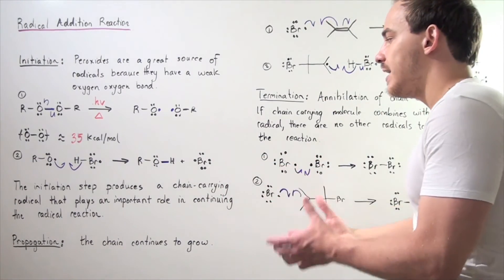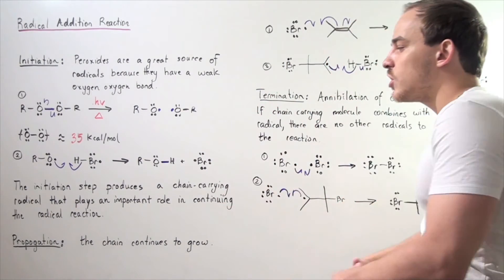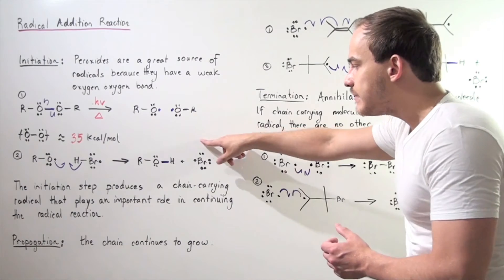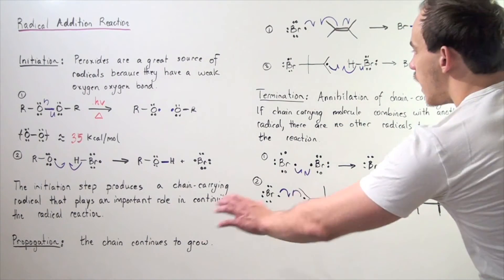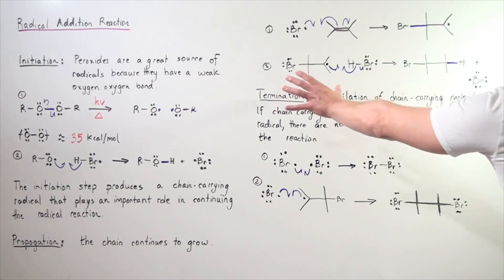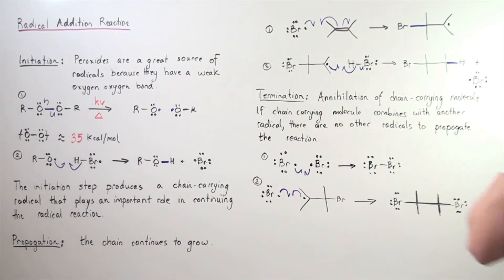We're essentially forming a chain-carrying radical in the initiation step, and we're forming that same chain-carrying radical in our second step of the propagation. This reaction can continue until termination takes place.